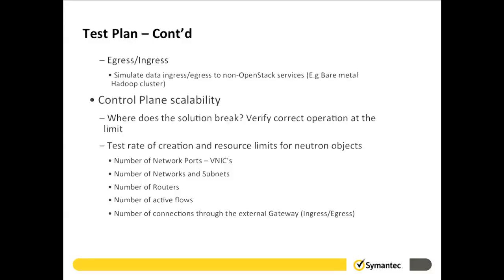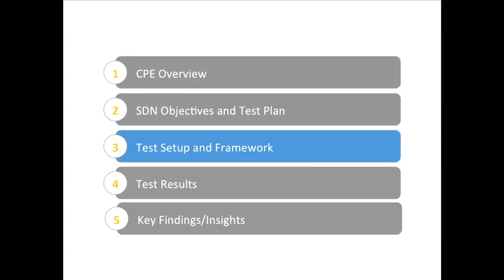The third section is control plane scalability. We test the rate of creation of various networking objects like ports, routers, and active flows, and we want to know where the solution breaks — and when it does, verify that desired functionality behaves as expected. With that, I'll turn it over to my colleague Jason to talk about the test framework and results.